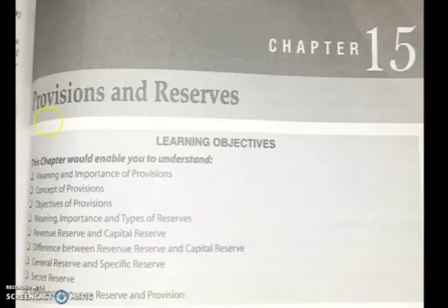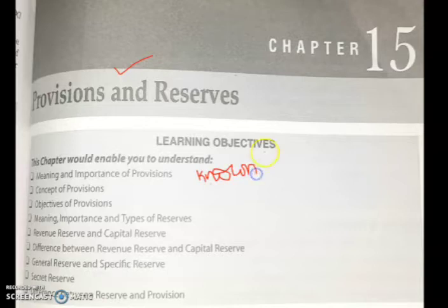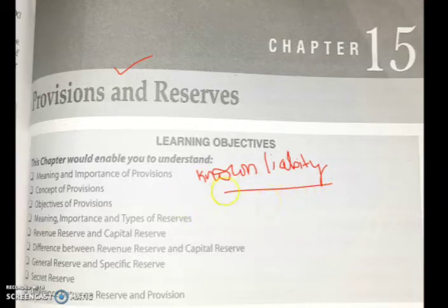The next chapter is provisions and reserves. Provision is an amount set aside by charging it to the profit and loss account to provide for a known liability, the amount of which cannot be determined with accuracy. Provision is a charge against the profit — we know the liability has occurred but we don't know the exact amount. That is the concept behind provision.